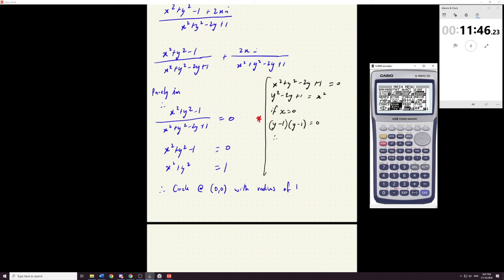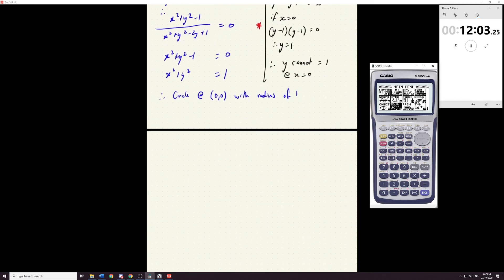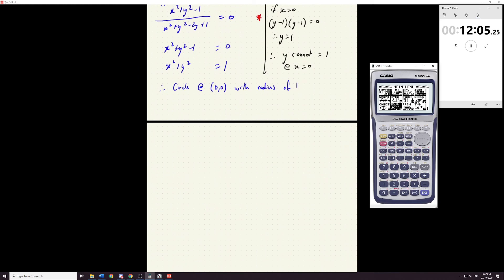Then this would happen. Therefore. Y equals one. So. Therefore. Y cannot equal one at x equals zero. Right. Let's draw this and see. I want 12 minutes. I'm feeling okay with this. This would look like this. The coordinates of each of these. Be.